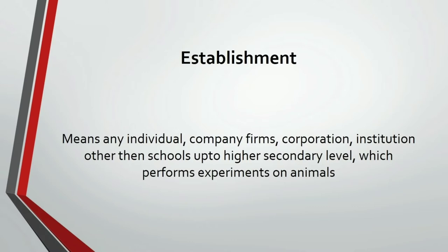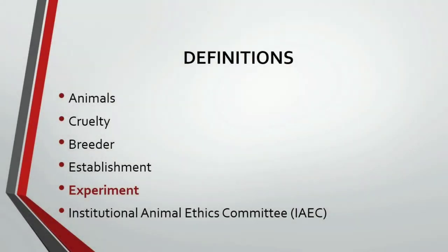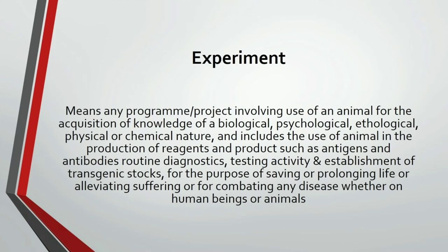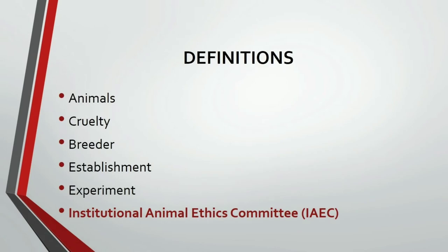Establishment means any individual, company, firm, corporation, or institution — other than schools up to higher secondary level — which performs experiments on animals. Next, the definition of experiment: any project or program which involves animals to gain knowledge regarding biological, psychological, ethological, physical, or chemical nature. This includes use of animals to produce reagents and products such as antigens and antibodies, routine diagnosis, testing activities, and establishment of transgenic stocks — all to save or prolong life, decrease suffering, or fight against disease for survival.